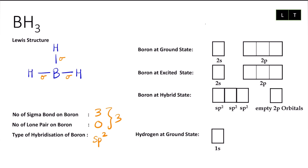Next, we are going to do the hybridization process for boron. We have three valence electrons for boron in period two — one, two, three. We have three sigma bonds, so that means we need three unpaired electrons. So I'm going to excite this one into the 2p orbital — I will get one here and then two electrons into the p orbital.